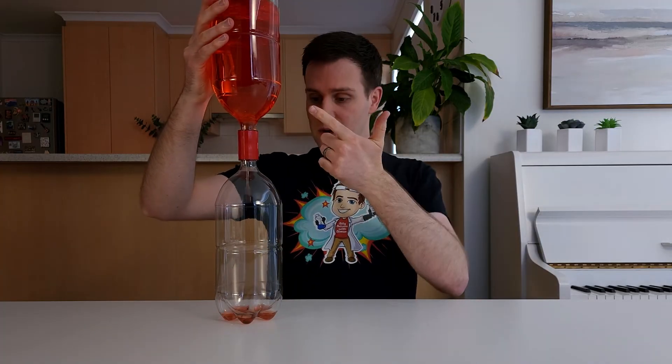So, what's happening? When we turn the bottles around, gravity pulls water from the top bottle into the bottom bottle. As it does this, air moves up to take its place. Right now we're getting a lot of bubbles. But if we give it a spin, the water starts spinning and a vortex forms!